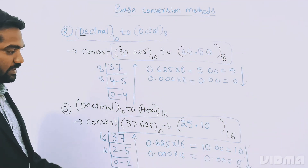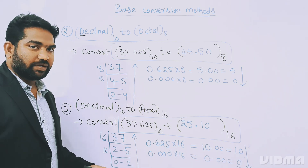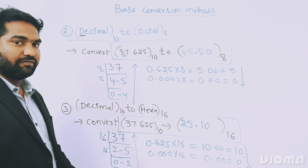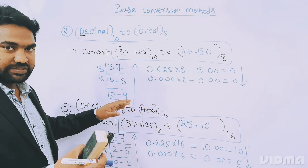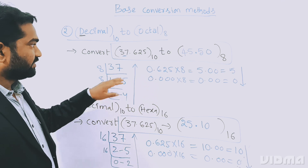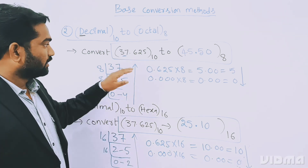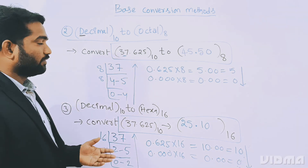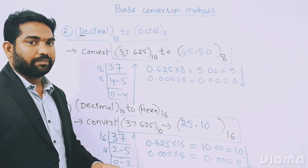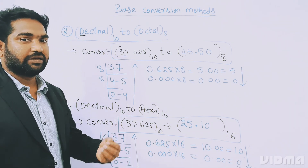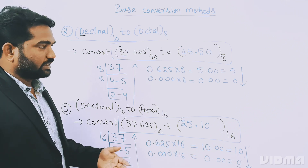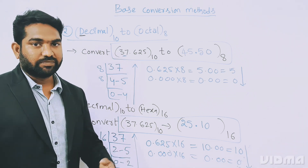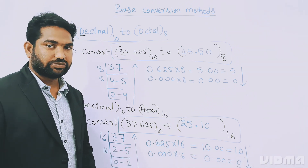This is how to convert from decimal to any number system. The only thing to remember: when converting from decimal to any base, divide for integer values and multiply for fractional values. We have completed three base conversion methods. Next we will look at the fourth method: any base to decimal. Thanks for watching — please subscribe.